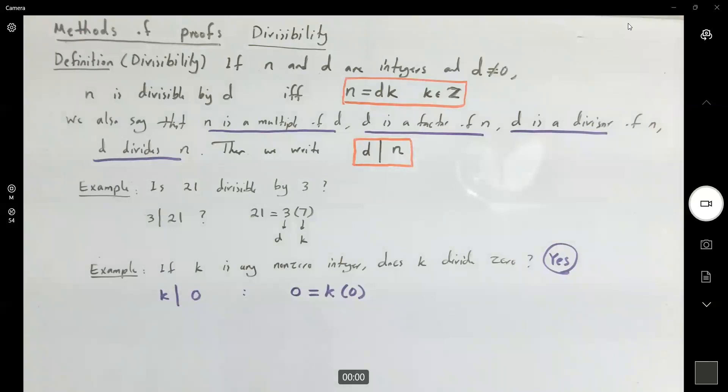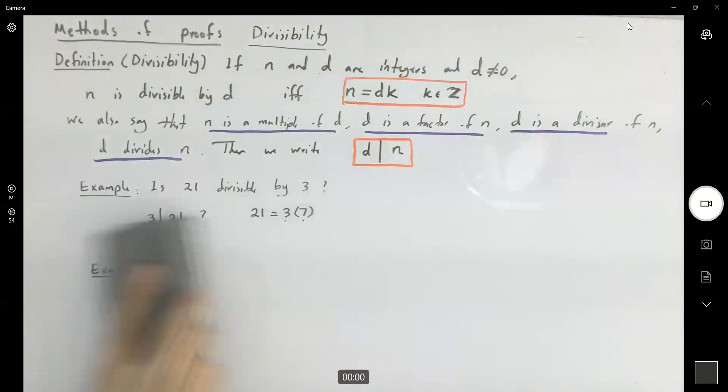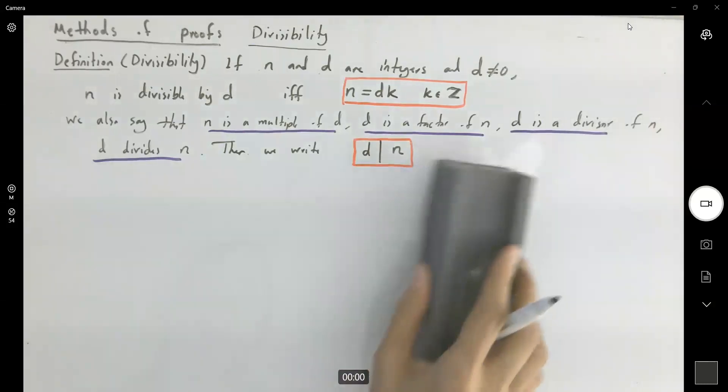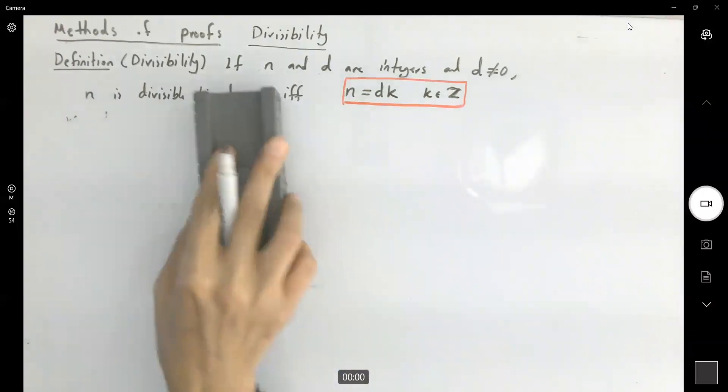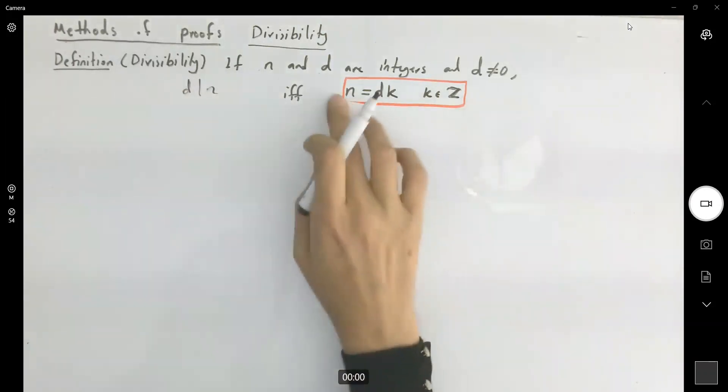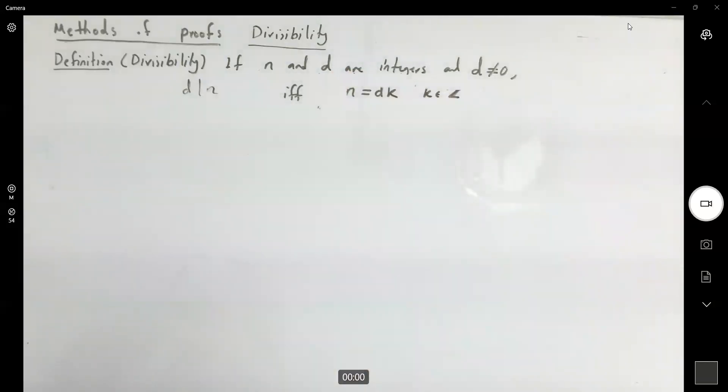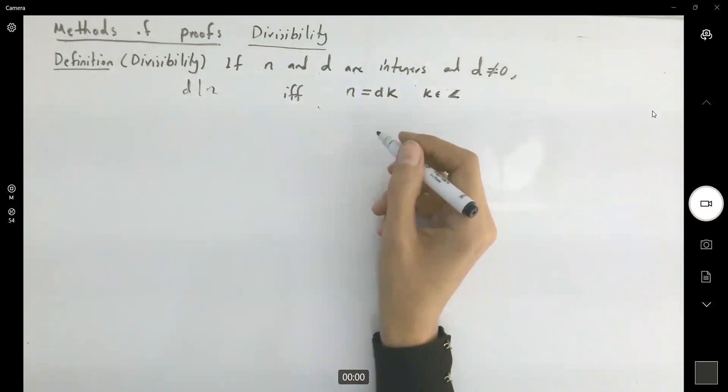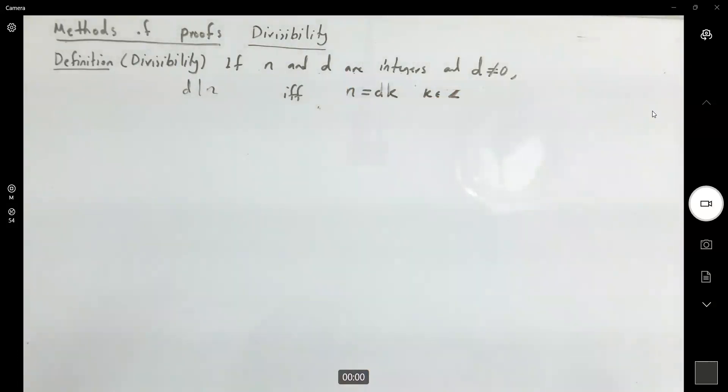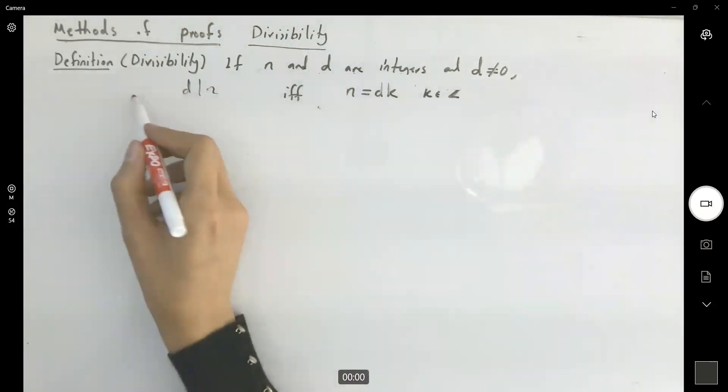Let's move on to some important theorems in divisibility. So d divides n. If I know that, then n is d times k. That's the definition of divisibility.